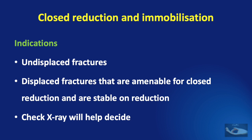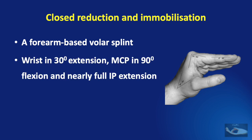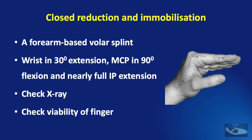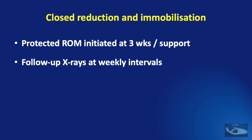If the check X-ray shows good alignment, closed reduction and immobilization is the best option of management. After a closed reduction, a forearm-based volar splint POP is applied with the wrist in 30 degrees extension, metacarpophalangeal joint in 90 degrees of flexion, and nearly full interphalangeal joint extension. A check X-ray needs to be taken and we must check the viability of the finger after reduction and immobilization. This immobilization must be continued for 3 weeks, after which protected range of movement exercises with support should begin. Follow-up X-rays at weekly intervals need to be taken to confirm fracture healing.